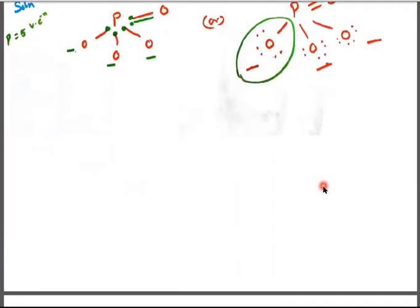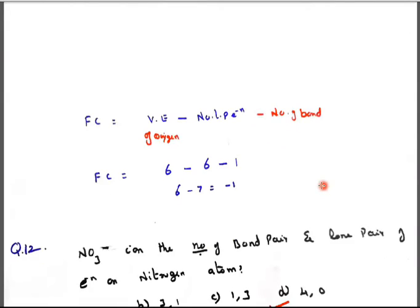So here all 3 lone pair of electrons with oxygen. Double bond is only 2 lone pair of electrons. The formal charge already I explained you: valence shell electron and valence number of valence electron minus number of lone pair electrons minus number of bonds.